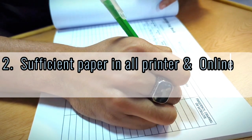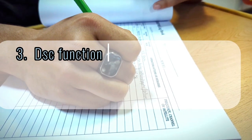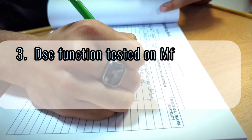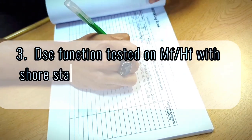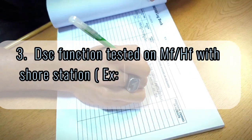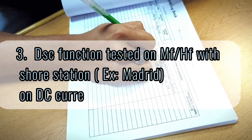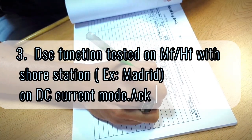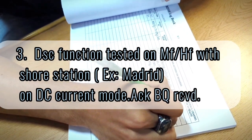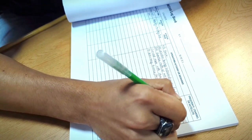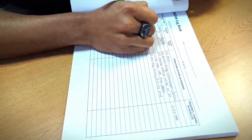The next DSC function check of MF/HF on DC current mode with shore station Saint Petersburg. DQ received and we have to mention the frequency. I have done this test on 2187.5 kilohertz, and also need to mention the station, their MMSI ID.